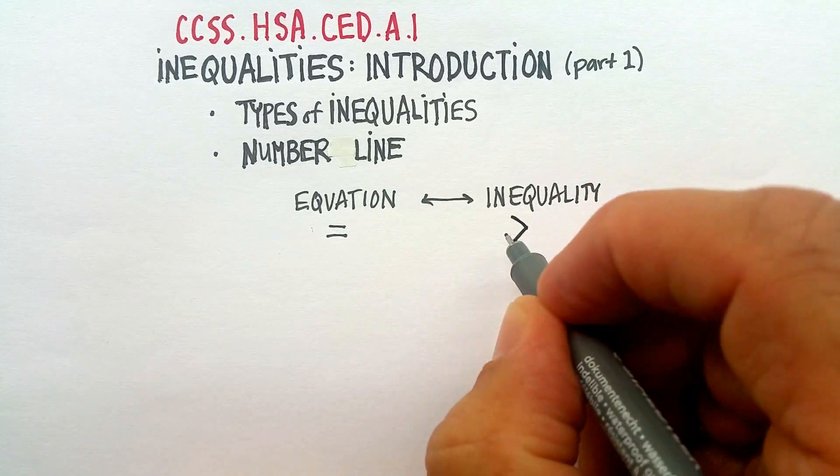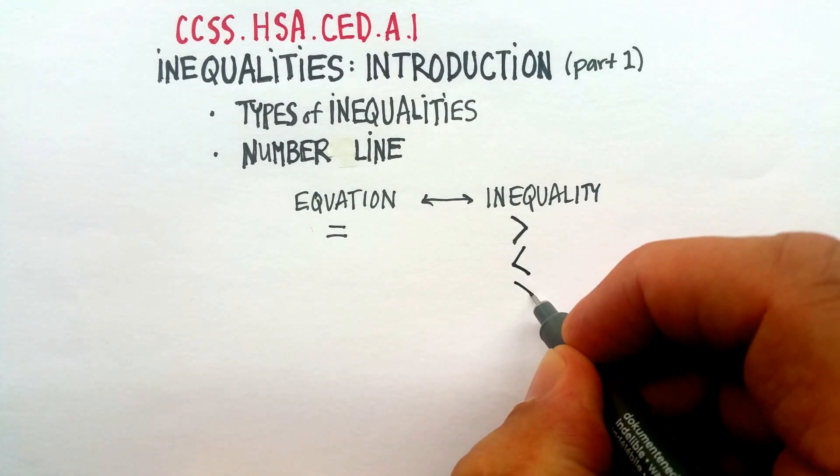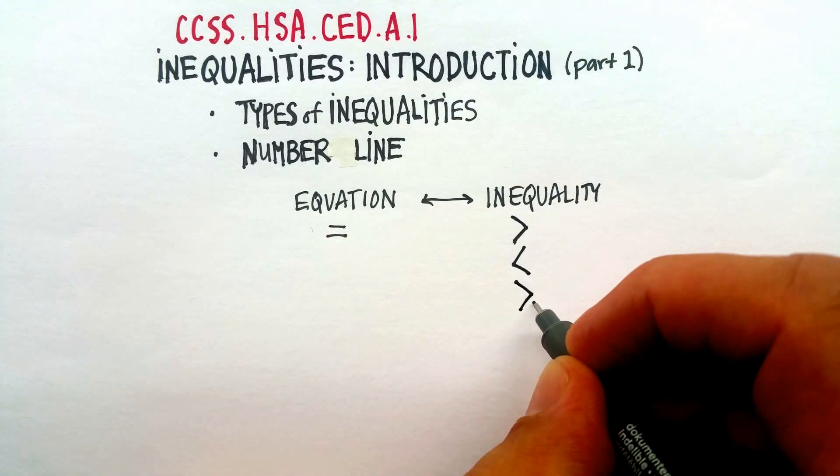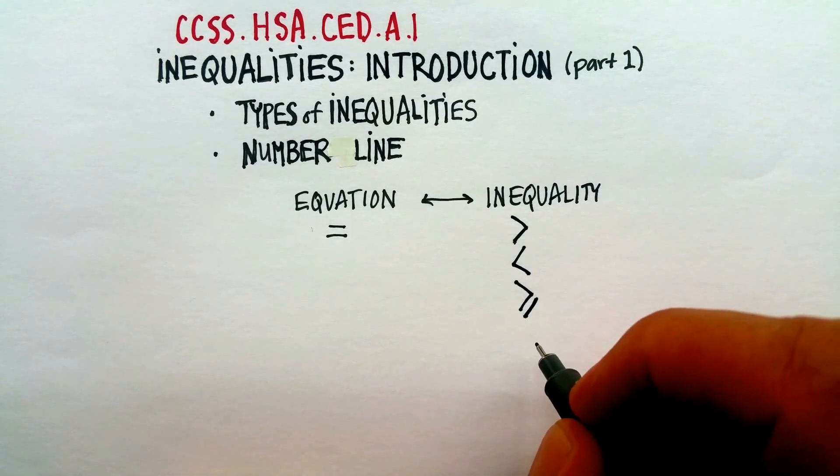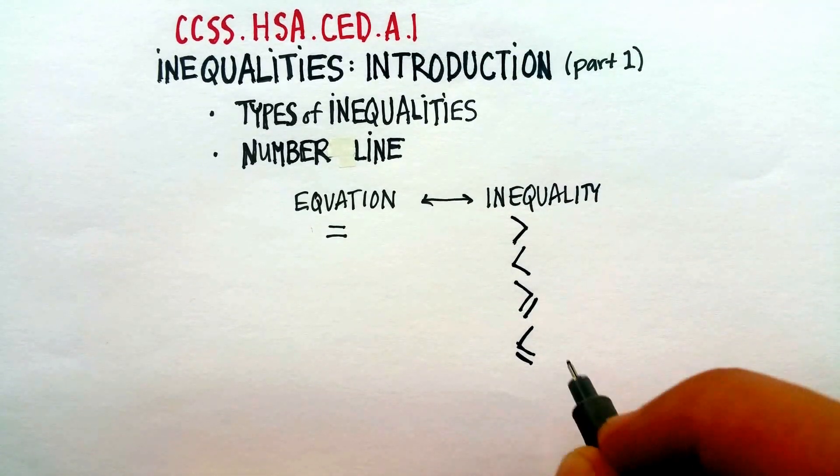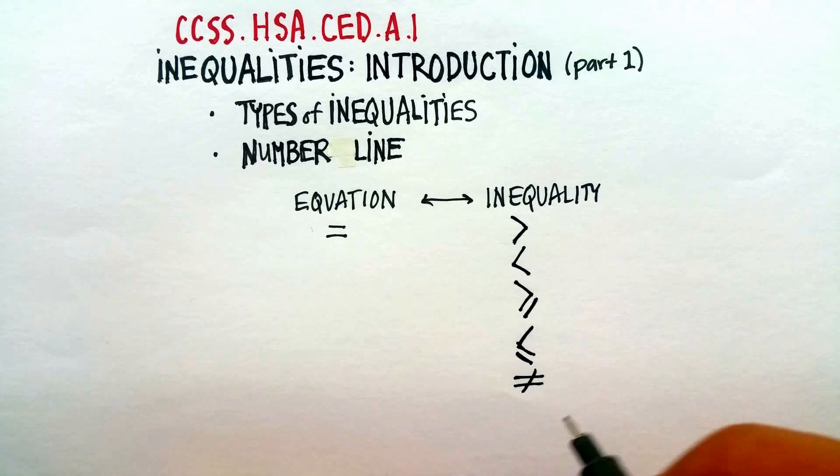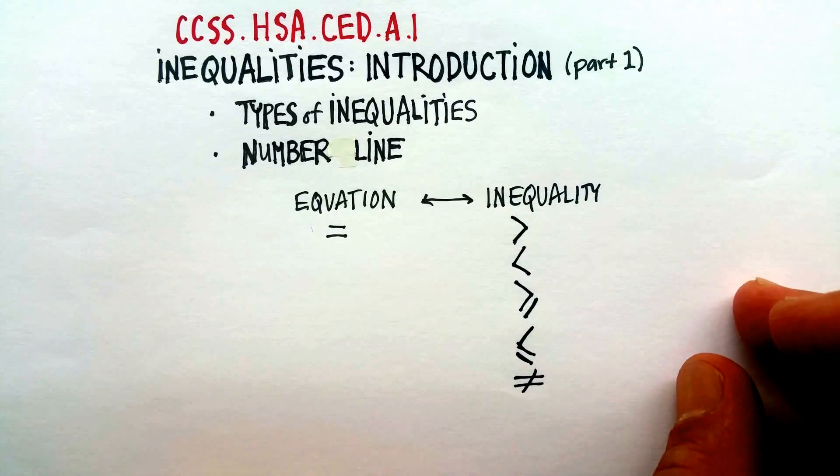They are the following: this one which means it's greater than, this one which means is less than, this one is greater than or equal to, this one is less than or equal to, and then one that we don't use all that often, but it's just an equal sign crossed out which means that these quantities are not equal to one another.